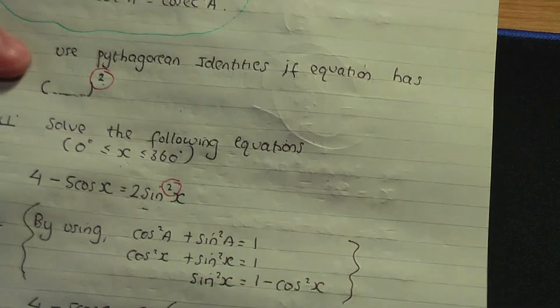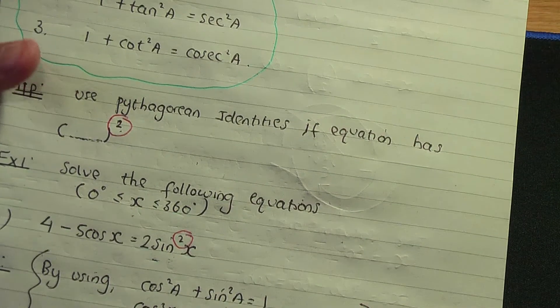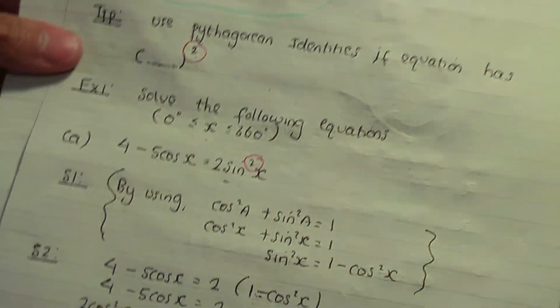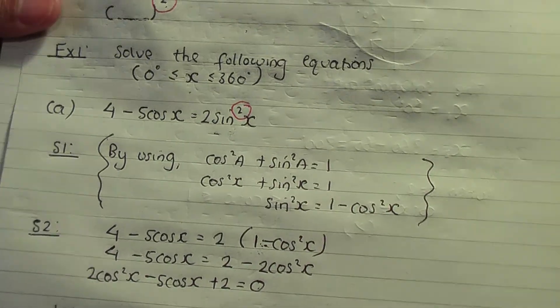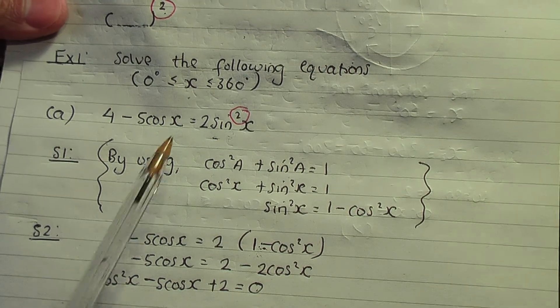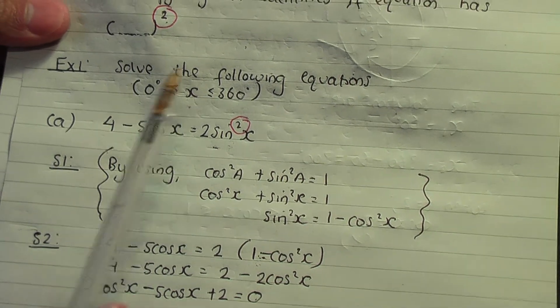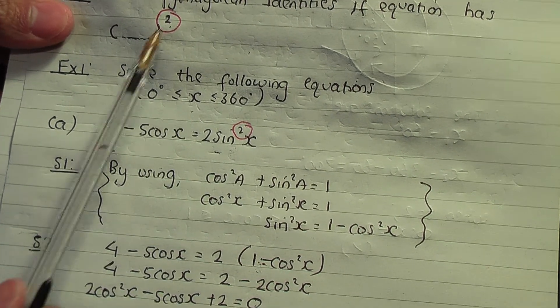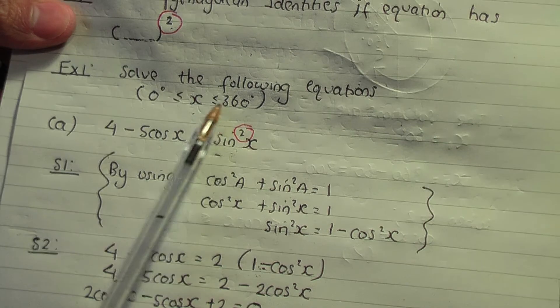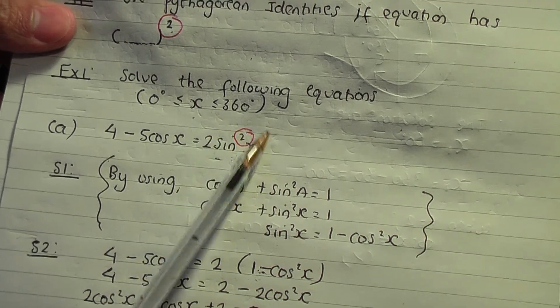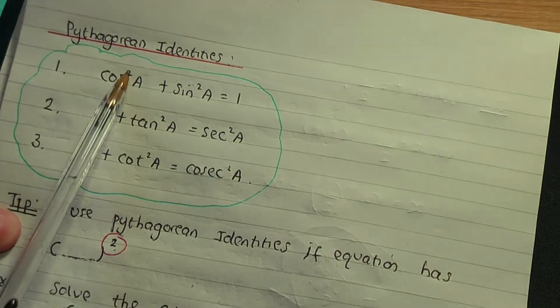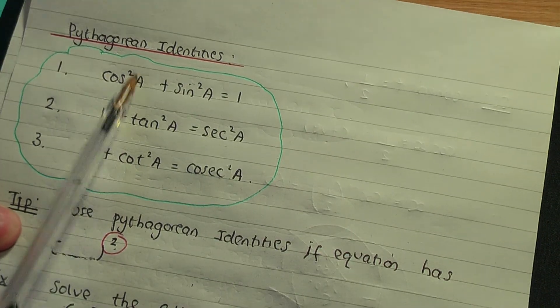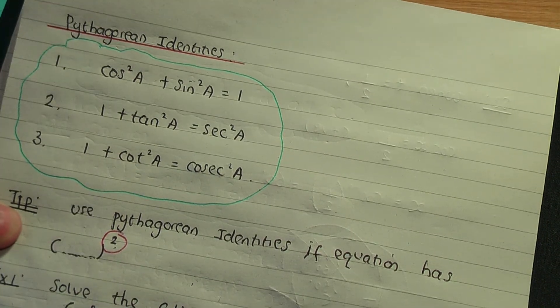So those are the steps to solve an equation using Pythagorean identities. The key point is: whenever you have a power of 2 on a trigonometric ratio, nine times out of ten you'll be using a Pythagorean identity to help solve the equation.